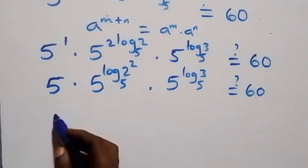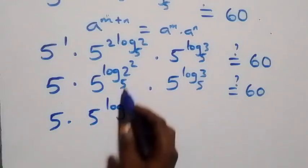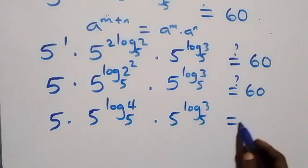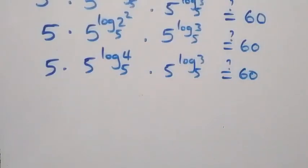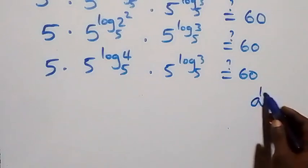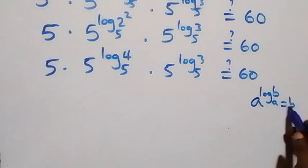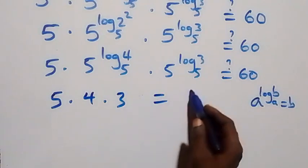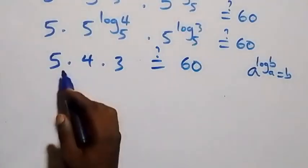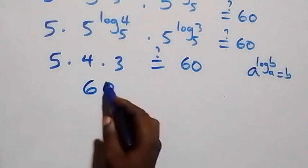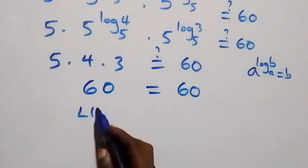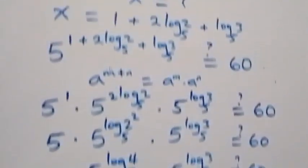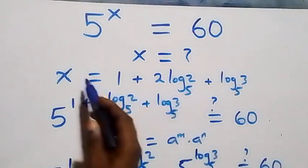We have 5 times 5^(log₅4) times 5^(log₅3). Since 5^(log₅4) equals 4 and 5^(log₅3) equals 3, this gives 5 times 4 times 3 equals 60. The left-hand side equals the right-hand side, confirming that x equals 1 plus 2·log₅2 plus log₅3 satisfies the original equation.